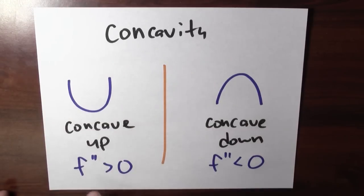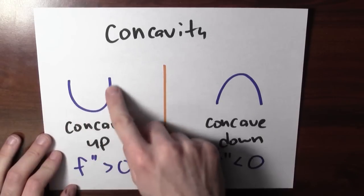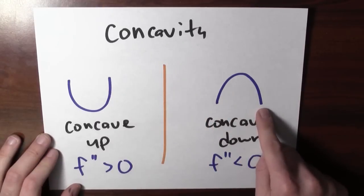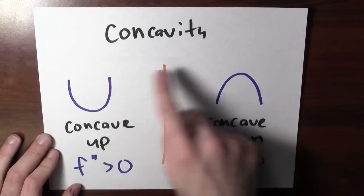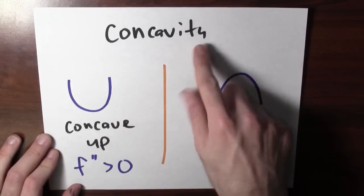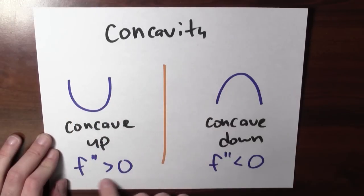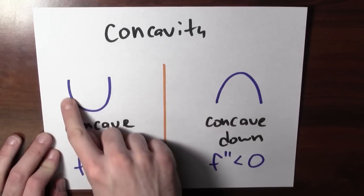Concave up, where the second derivative's positive, and concave down, where the second derivative is negative. And I've drawn sort of cartoony pictures of what the graphs look like in these two cases. Now note, it's not just increasing or decreasing, but this concavity is recording sort of the shape of the graph in some sense. Positive second derivative makes it look like this.